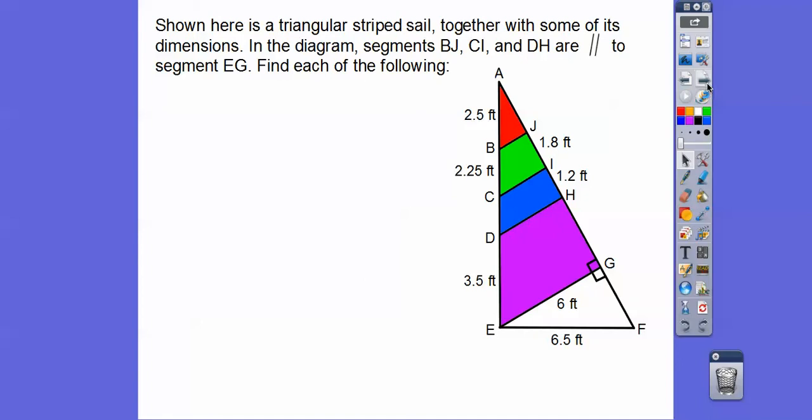So here we go. Shown here is a triangular striped sail together with some of its dimensions. In the diagram, segments BJ, CI, and DH are parallel to segment EG. So find each of the following.